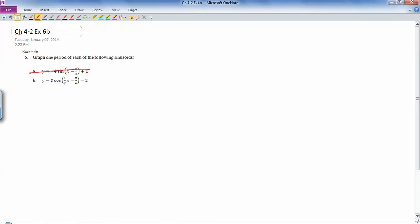So here's 6b: y equals, now the parent function is going to be just cos x, and we're turning it into y equals 3 cos (½x - π/4) all minus 2.